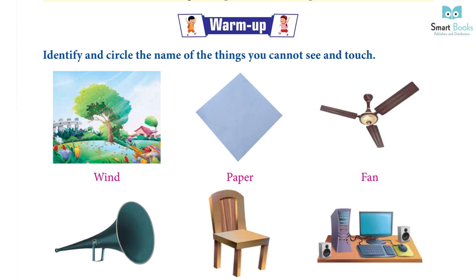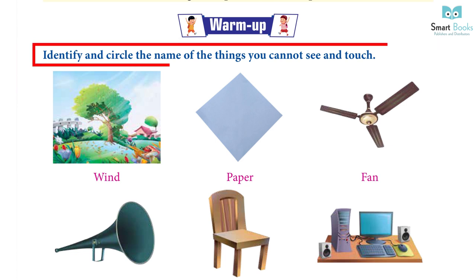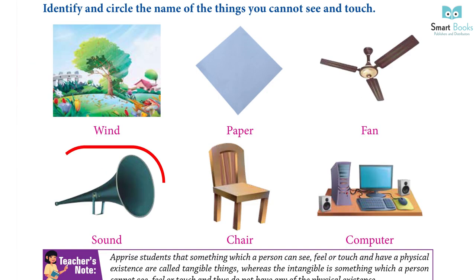Warm up: Identify and circle the name of the things you cannot see and touch. Answer: Circle wind, sound.